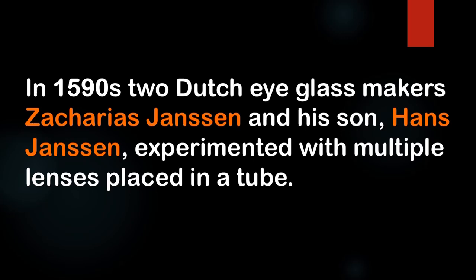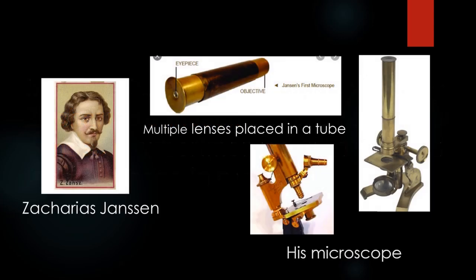In the 1590s, two Dutch eyeglass makers, Zacharias Janssen and his son Hans Janssen, experimented with multiple lenses placed in a tube. They attached two lenses to a tube.